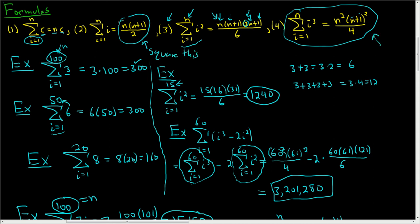right? n squared is n squared. n plus 1 squared is n plus 1 squared. 2 squared is 4. So nice, cheap memory trick.